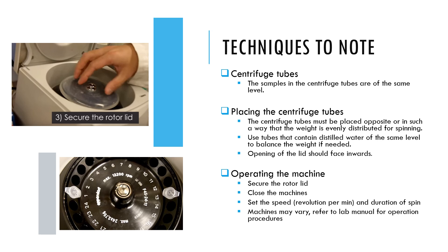When using the centrifuge machine, ensure that the samples in the centrifuge tubes are at the same level. The centrifuge tubes must be placed opposite each other, or in such a way that the weight is evenly distributed for spinning. You may use tubes containing the same volume of distilled water to balance the samples if needed. Secure the rotor lid and close the machine, then set the speed in revolutions per minute and duration. As machines may vary, it is advisable to refer to the laboratory manual for specific operation procedures.